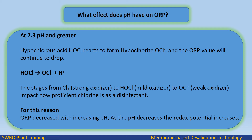For this reason, ORP decreases with increasing pH. As the pH decreases, the redox potential increases.